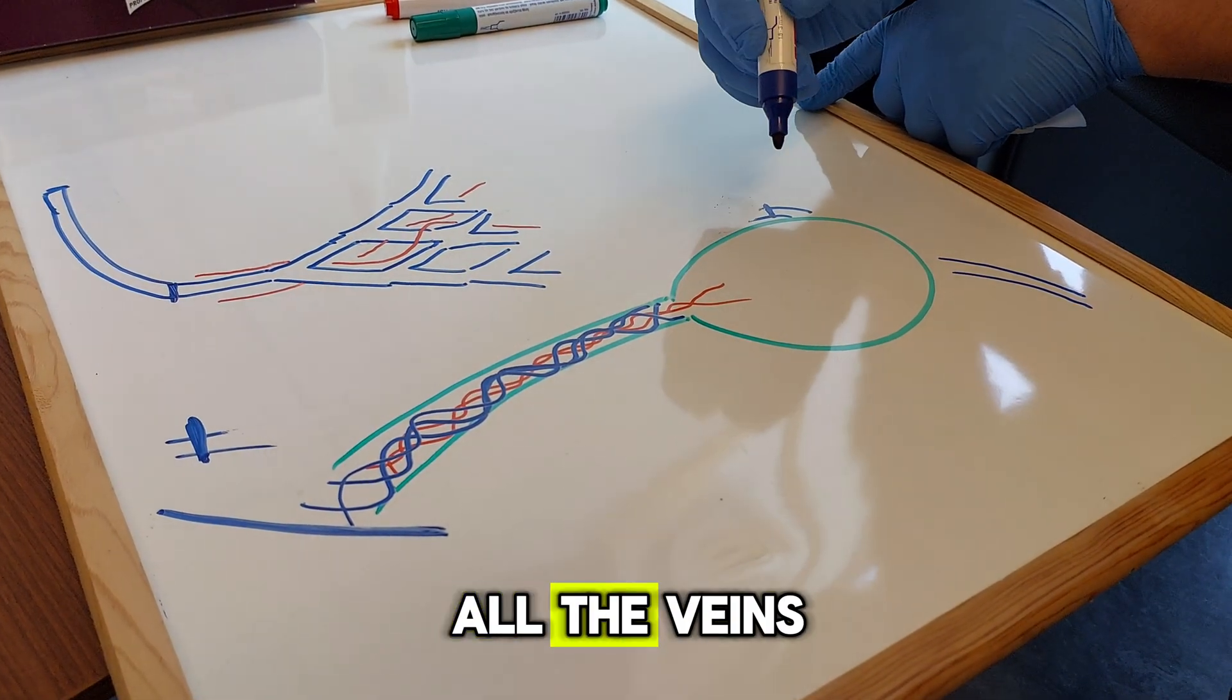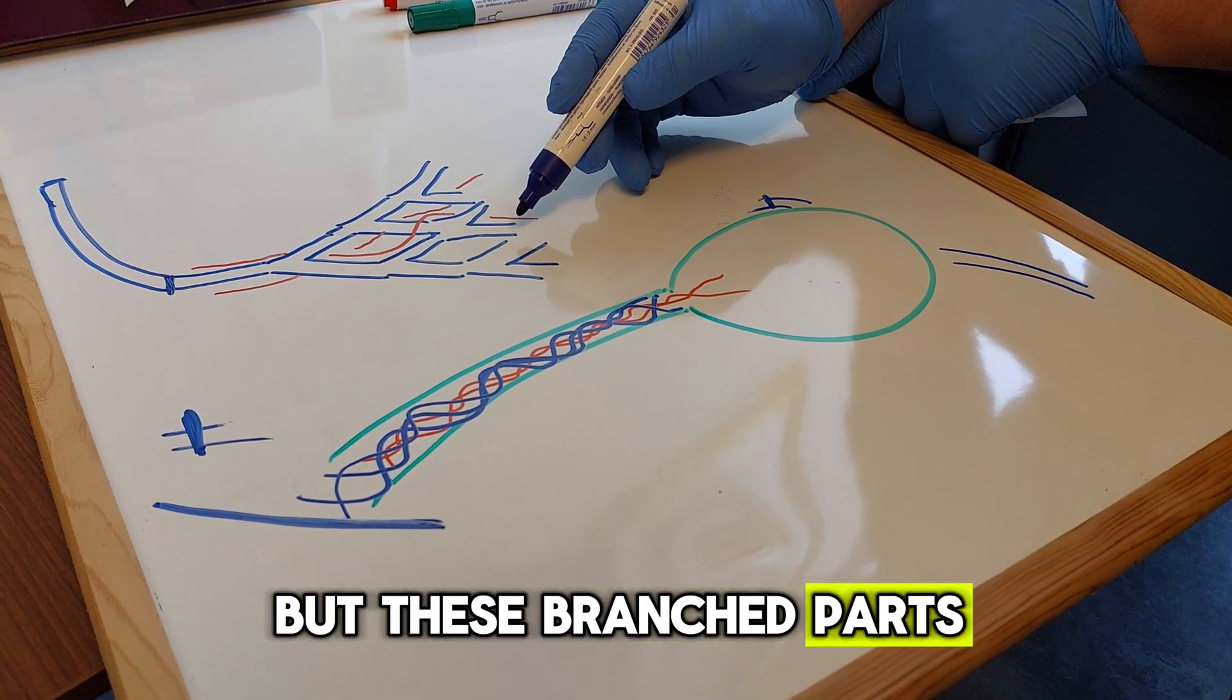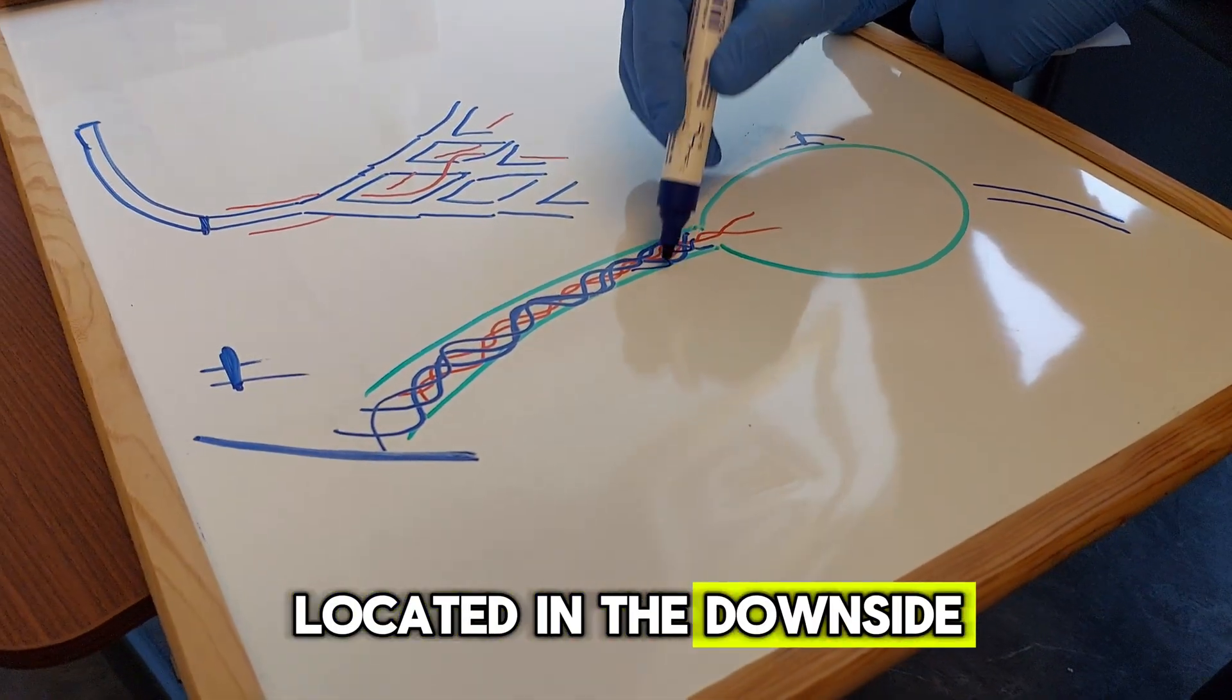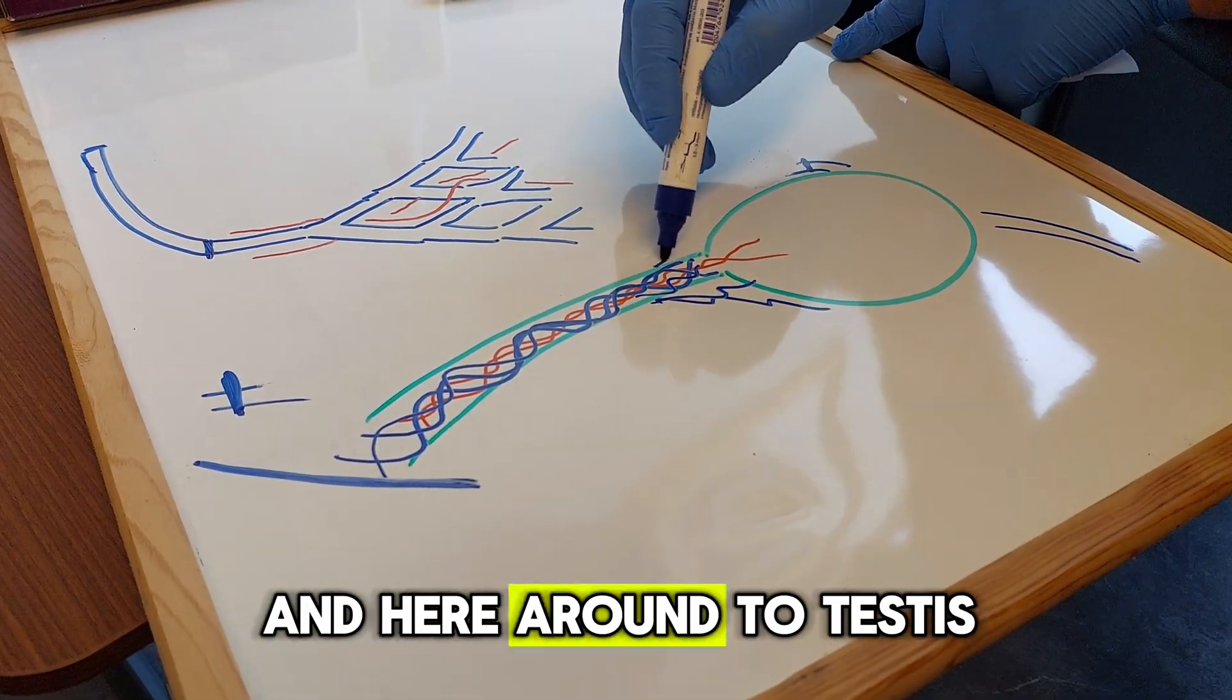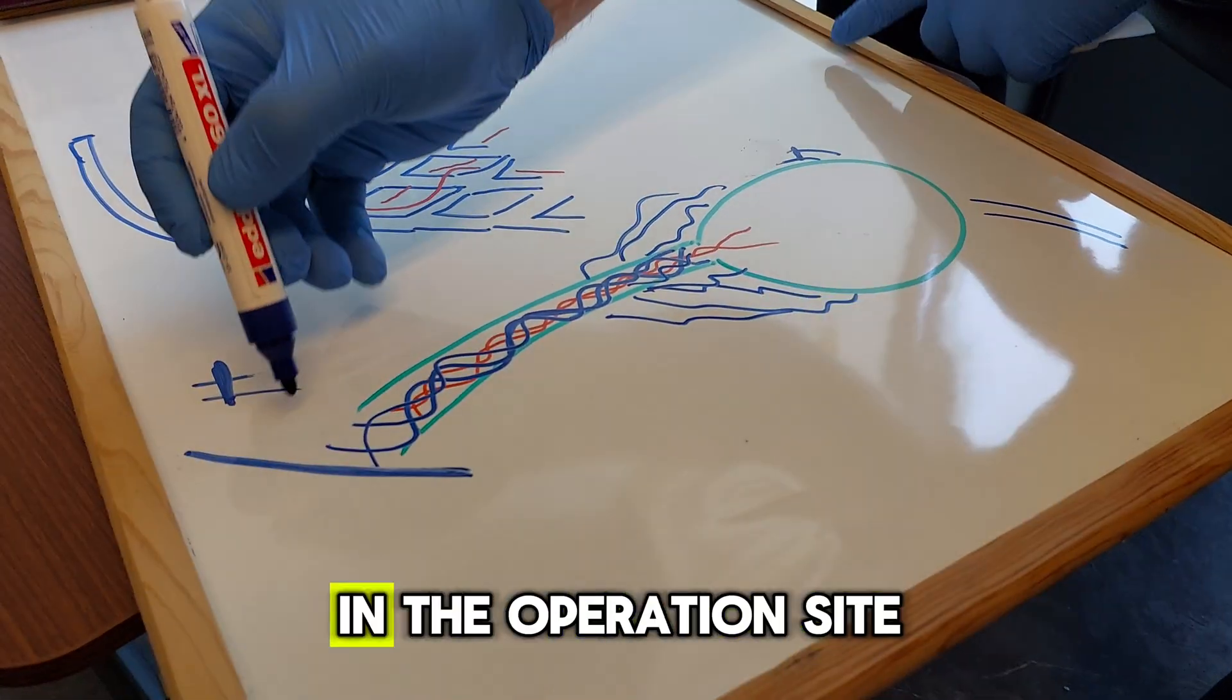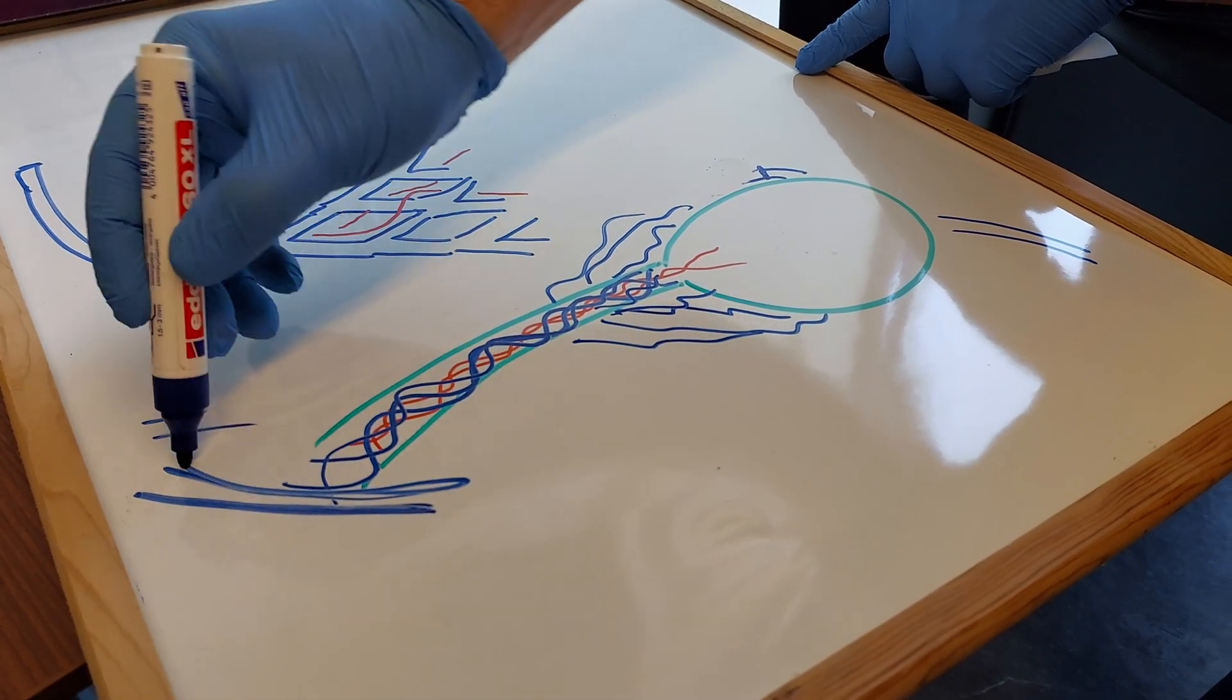We want to remove all the veins, but these branched parts are impossible to remove and they are usually located in the down side. Here on the testis they are separated, so usually after the operation, in the operation side we will see just the artery.